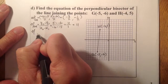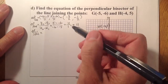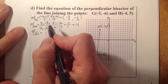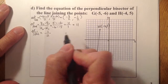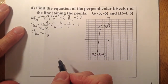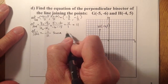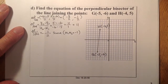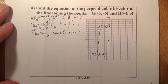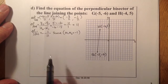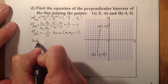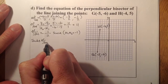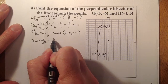To find the perpendicular gradient: since 11 is the same as 11 over 1, I'll flip it and change the sign. The perpendicular gradient is minus 1 over 11. The reason is that gradient 1 times gradient 2 gives negative 1.